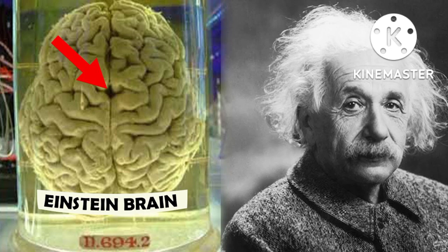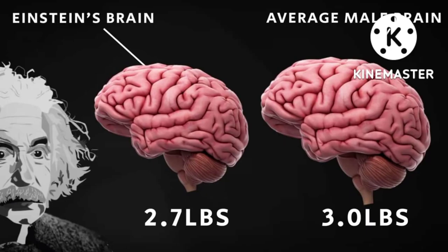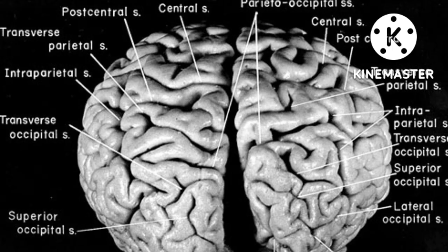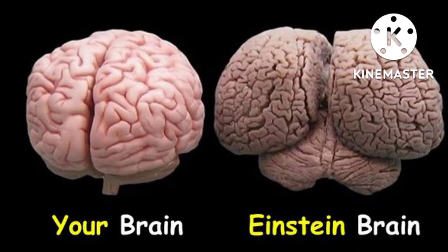Einstein's brain had a much shorter lateral sulcus that was partially missing. His brain was also 15% wider than the other brains. The researchers think that these unique brain characteristics may have allowed better connections between neurons important for math and spatial reasoning.